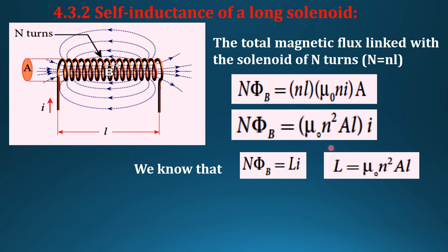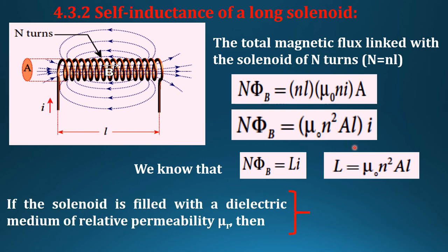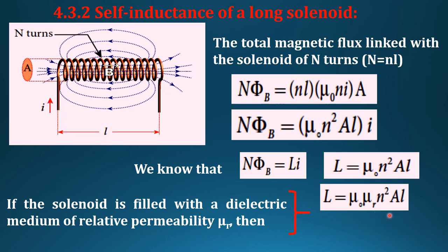If the solenoid is filled with dielectric, or if the solenoid is wound on a dielectric of relative permeability mu_r, then we can write L as mu_0 mu_r n^2 A l. Or mu_0 mu_r could be written as mu, and so L will be equal to mu n^2 A l.